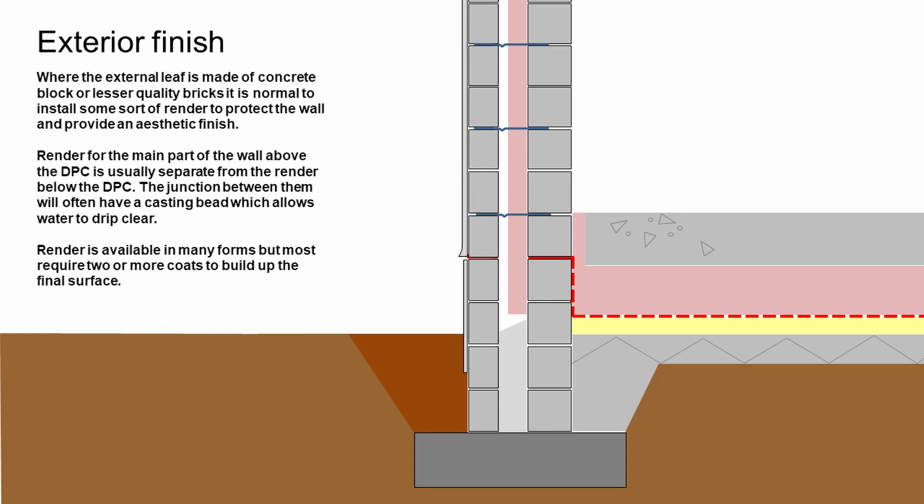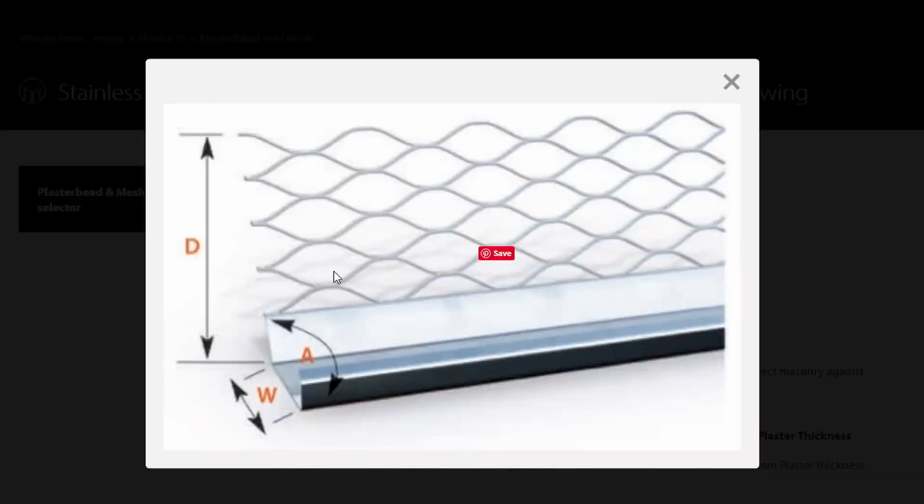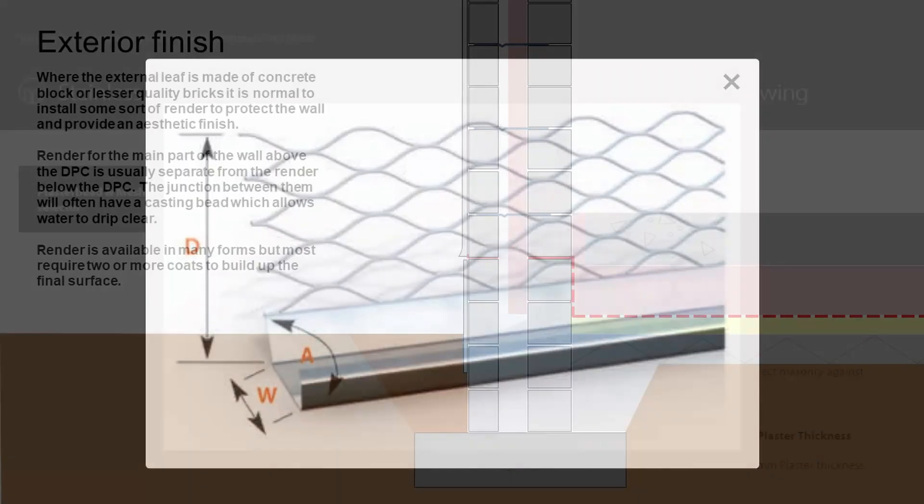We would probably install that so the render above the DPC is installed in one layer, and below the DPC we've got a separation, a different layer. Above the DPC there's usually a bead, a little metal bead that's fixed back to the wall. We would render down onto that so it gives a slight push out from the surface so that water can drip off. Below the DPC, it's common to just have a sand and cement smooth render, and that's just really to tidy it off.